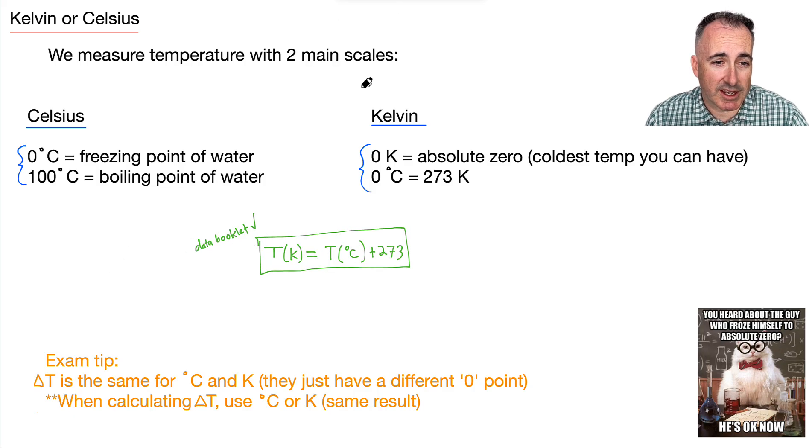Okay. So here's an exam tip. The amount that you go up, so in other words, delta T, if you have like a change in temperature, it's actually the same for degrees Celsius and Kelvin. They just have a different zero point. So that means if you've got a question where they're saying put in delta T, you can actually say what the change was in Celsius because it's the same as the change in Kelvin.